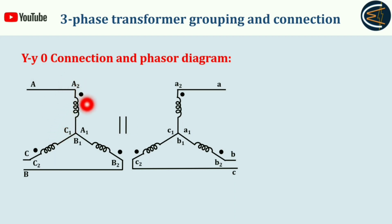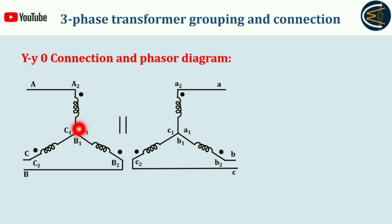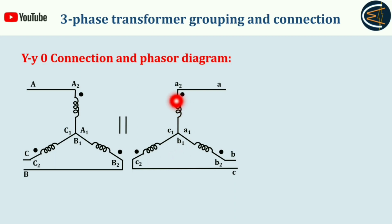No phase displacement means we can represent that by showing the windings in parallel. For the primary side there are three windings, and similarly for the secondary side there are three windings, and all windings are parallel to each other. The A phase for the primary side aligns with the A phase for the secondary side, B phase with B phase, and C phase with C phase — they are identical or symmetrical. This is just a way of representing the YY0 connection.